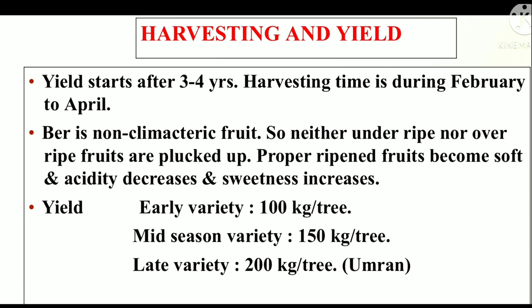Yield: early variety gives 100 kg per tree, mid-season variety gives 150 kg per tree, and late variety such as Umran gives 200 kg per tree.